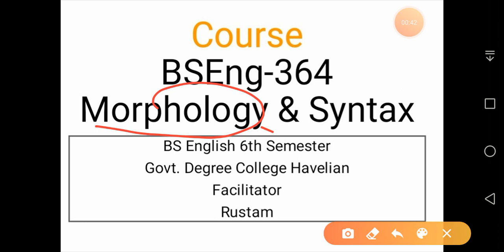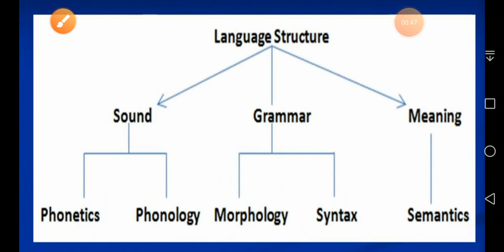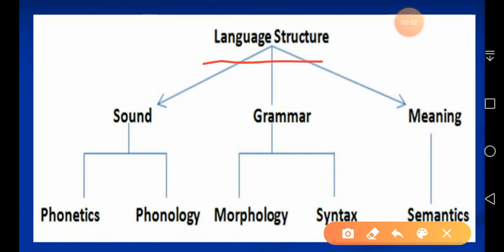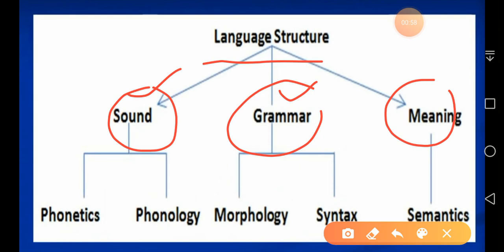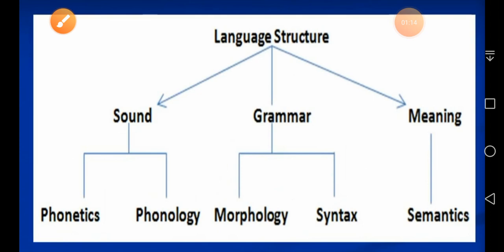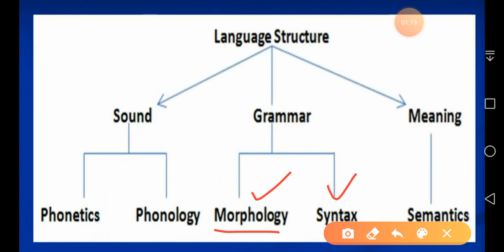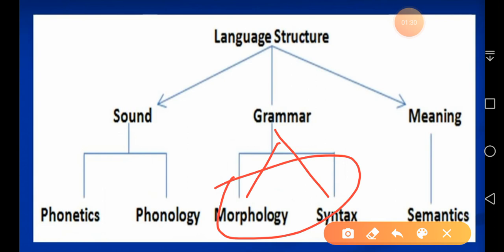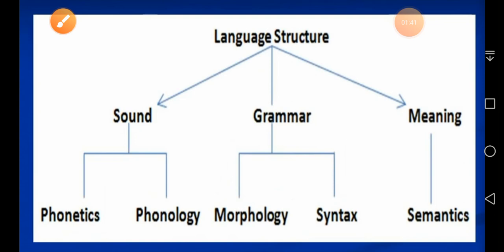Now Morphology and Syntax — they both are part of grammar. Language consists of three basic components: sound, grammar, and meaning. Grammar is the central part which connects sounds with meaning. The basic unit of sound is the phoneme, and the basic unit of grammar is the morpheme. Today I will cover only morphology. Morphology and syntax are sub-branches of grammar. Grammar consists of words and sentences, and the forms or parts of words are studied in morphology.